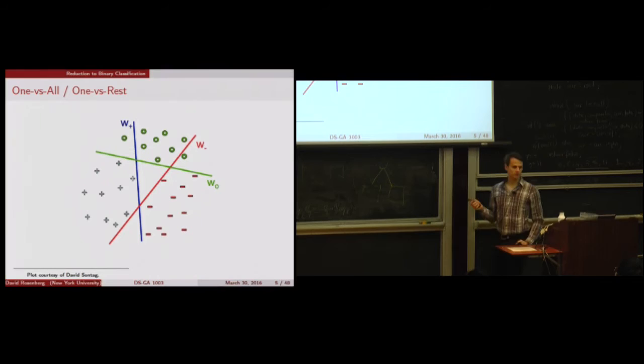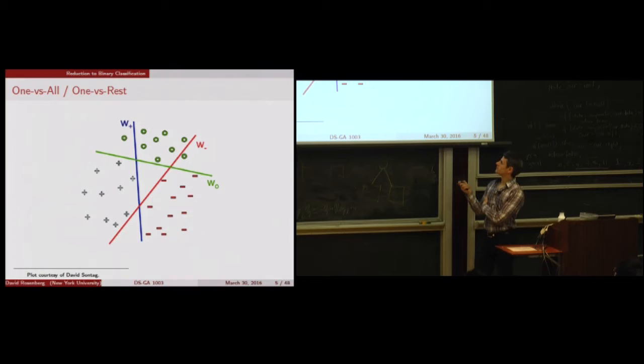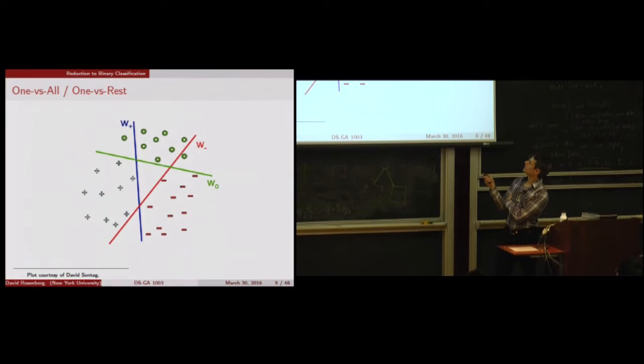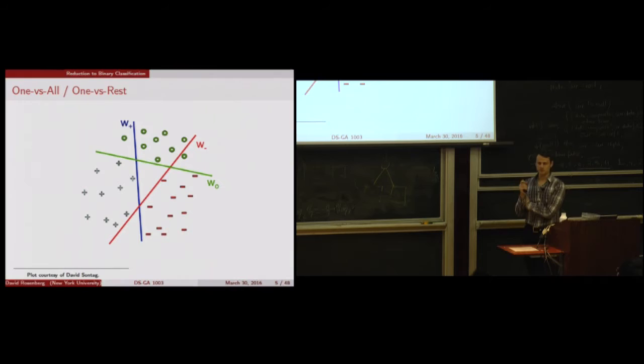What do we do with these classifiers when we get a new point? Hopefully, if you find a point in the space, only one classifier says 'that one belongs to me.' If you're in the minus region, only the minus classifier claims you, so we predict minus. The problem comes in regions where two classifiers want to claim you — minus and O in that corner region — and there you have to find some way to resolve it.